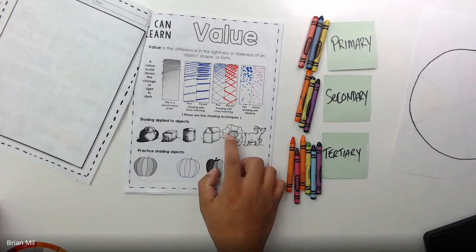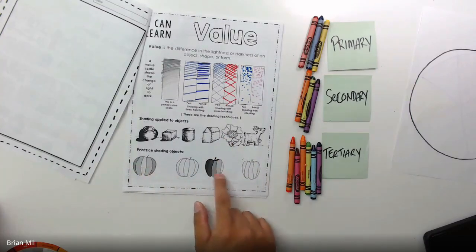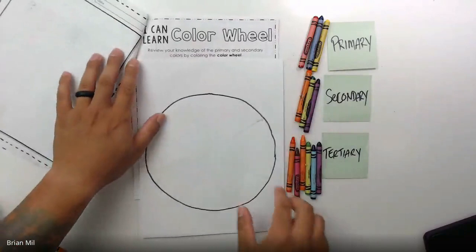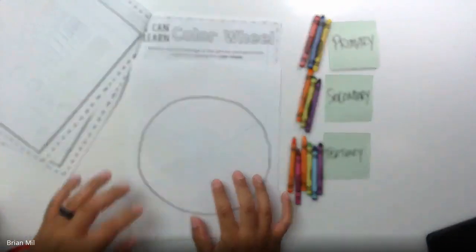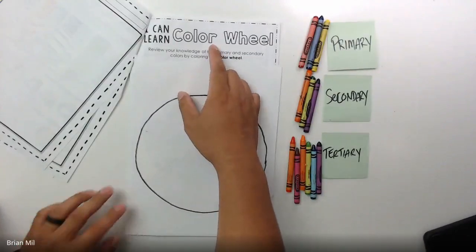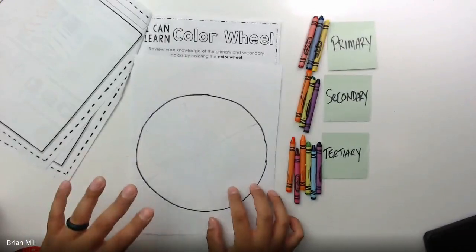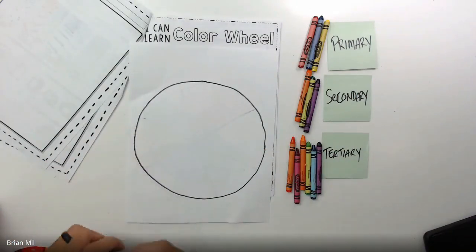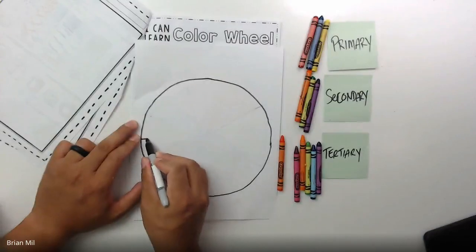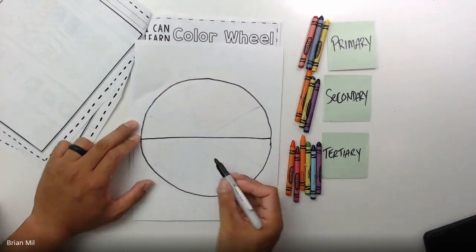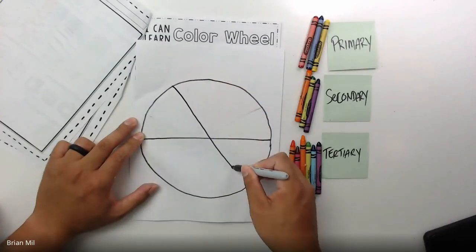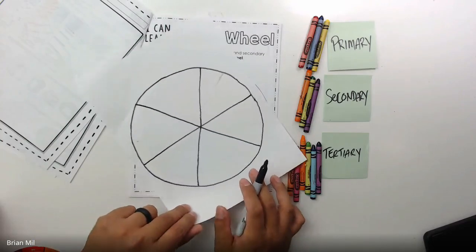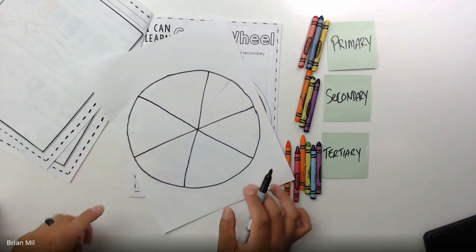You could practice shading down below. Now I'm going to flip the paper over to the color wheel. I'm covering it because I already completed it with the last class and don't want to spoil it. It should show a blank circle with a couple of lines. If you don't have the worksheets, use a blank sheet of paper and I'll show you how — just draw a line across, then make a big X, and you'll have six spots.